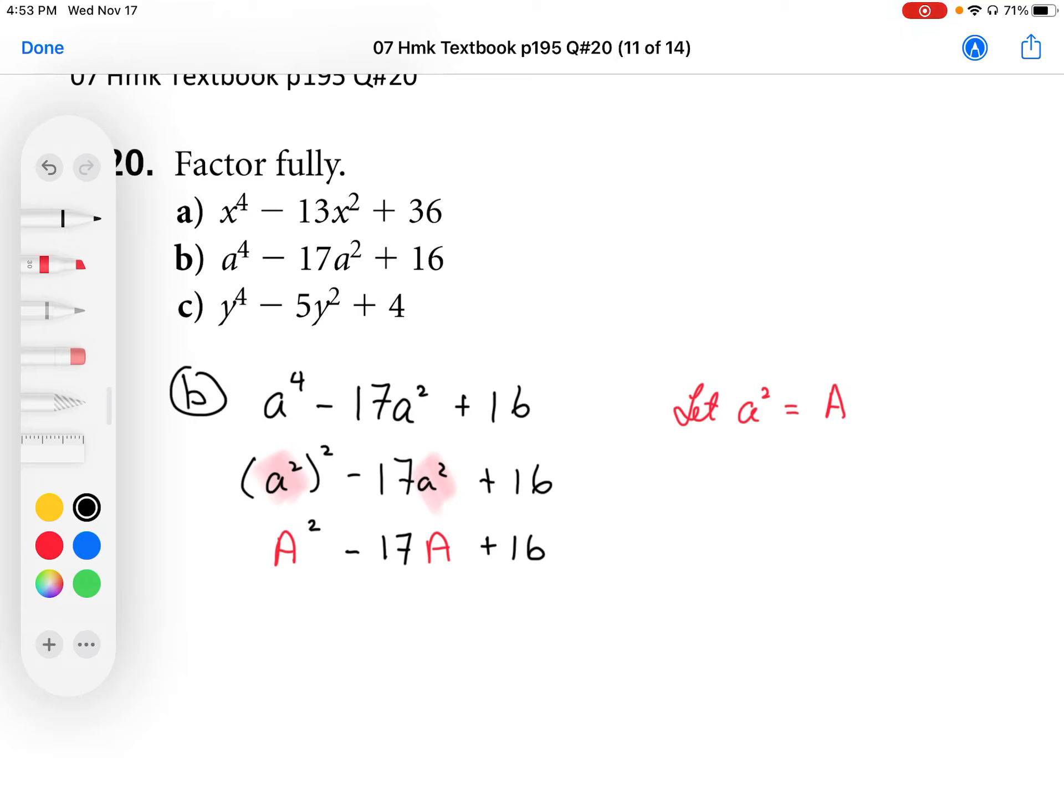So this is factorable like a regular quadratic. We have two numbers that multiply to 16 and add to negative 17. So we're looking at A minus 16 and A minus 1.